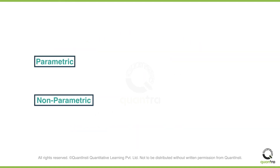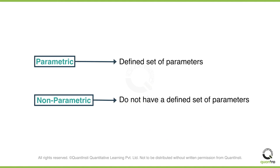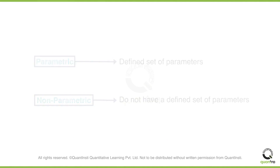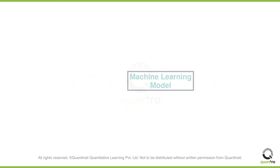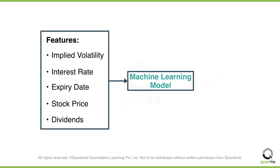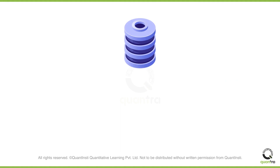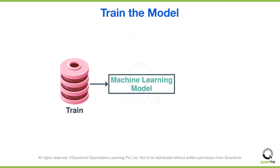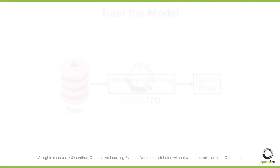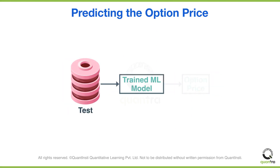What differentiates non-parametric models from parametric models is that these models do not have a defined set of parameters. The machine learning approach involves selecting features that hold important information and using these features to predict the estimated price. We split this data into train and test datasets, train the model to map the option prices to the input parameters, and finally test the trained model on the test dataset.